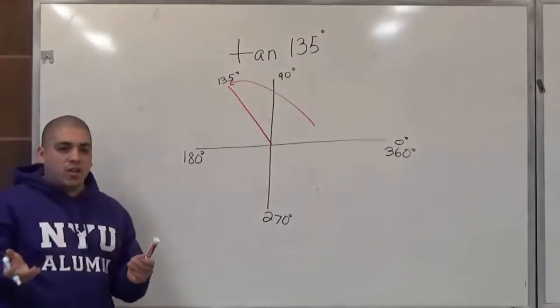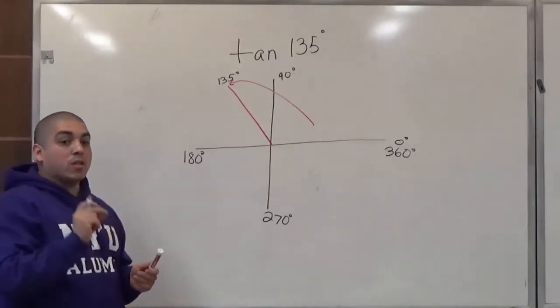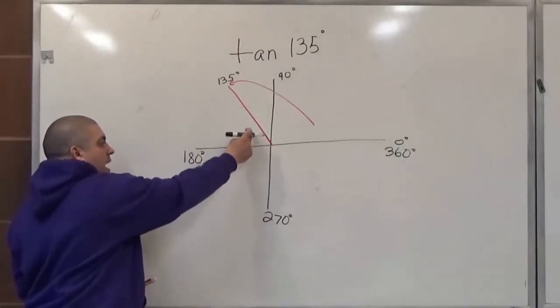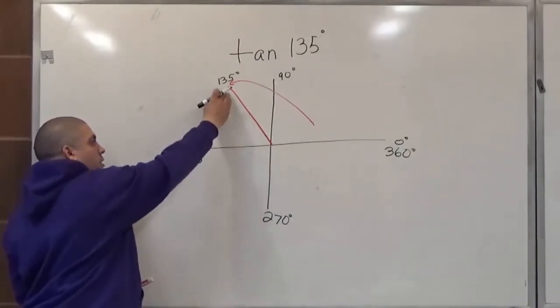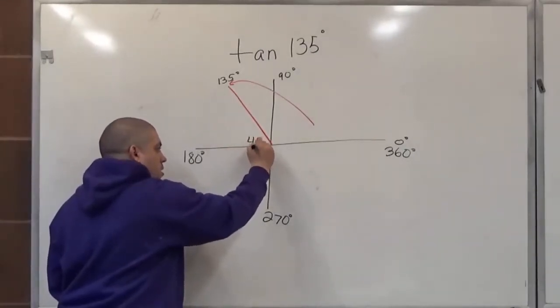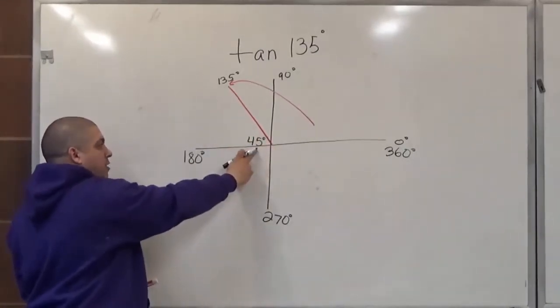But we're not going to deal with 135 degrees, we're going to deal with what's known as the reference angle. That's the degrees left until you get to the x axis. So from 135 degrees to 180 degrees, what's remaining is 45 degrees. This is known as the reference angle.